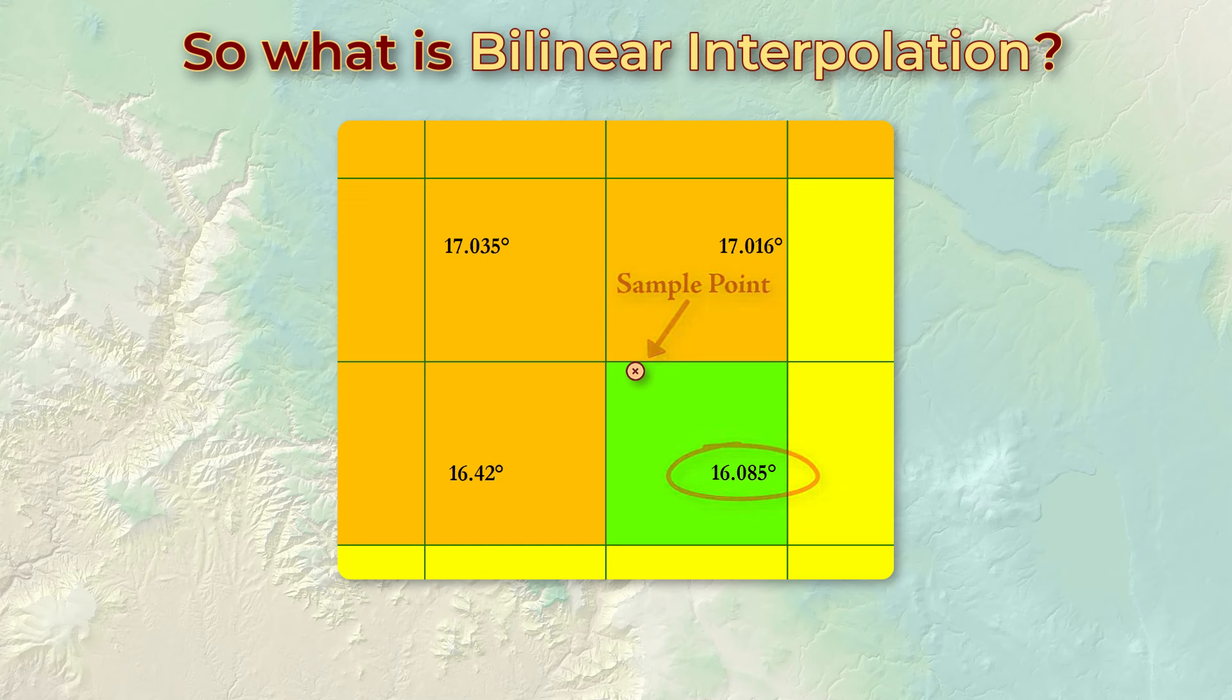But is this the most reasonable method here? We know that in the real world the landscape isn't divided up into these neat little squares, and we know that the region within the cell doesn't all have a constant slope of 16.085 degrees. Slope changes constantly over the landscape.